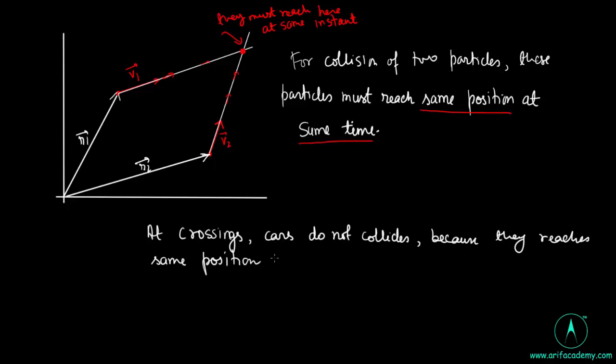At crossing, cars do not collide. Cars do pass the crossing but they do not collide because they reach the same position at different time. At any position, they reach a different point. They do not reach the same position simultaneously, otherwise they could collide together.